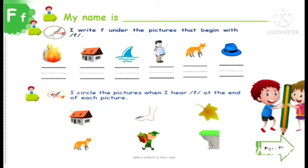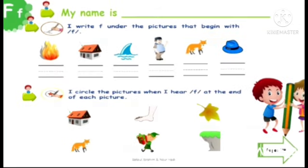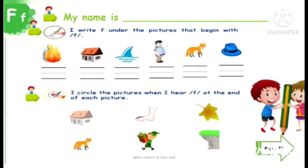Let's go down to the second instruction. I circle the pictures when I hear the F sound at the end of each picture. So what you have to do is pay attention to the ending sound. Then circle the pictures that end with the F sound. Get ready to start! Roof, roof, foot, leaf, fox, elf, and cliff.